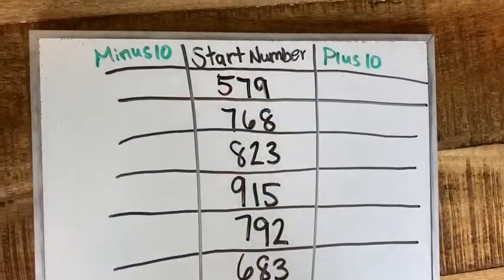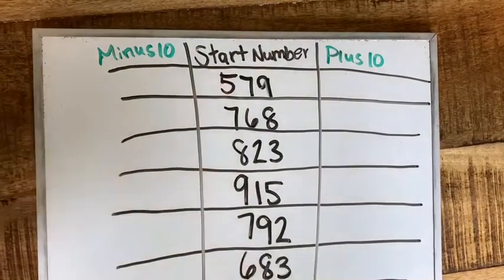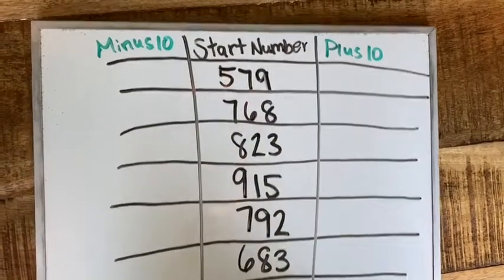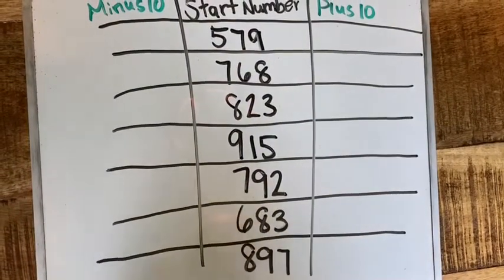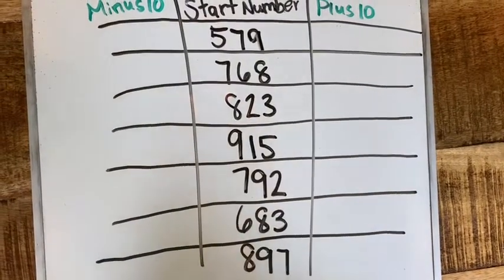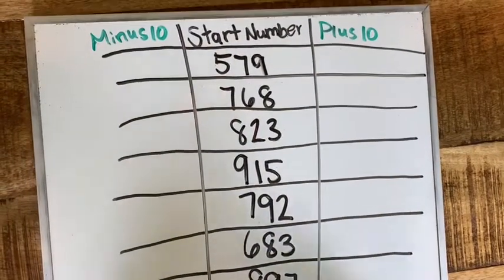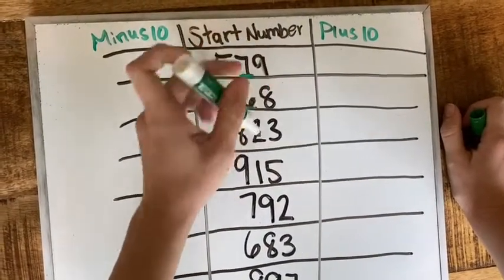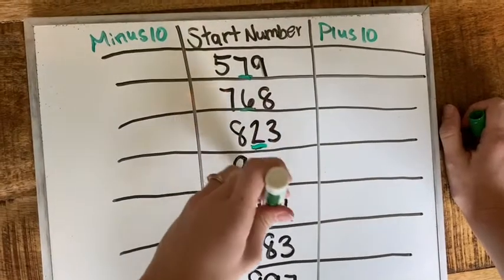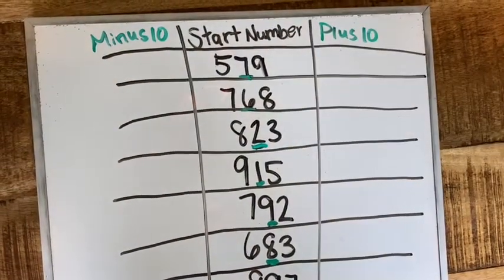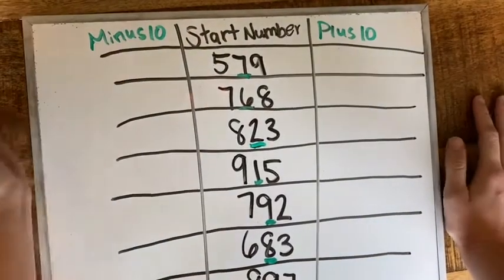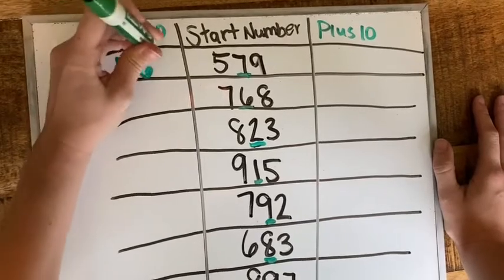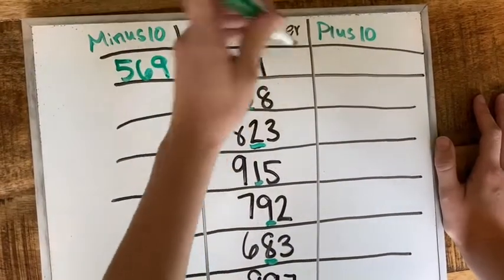All right, now we have page 327 and it's minus 10 and plus 10. Now I will say I went in order until the last one and I skipped to that one because I wanted to make sure that we talked about that one. So 579 plus 10, so we're looking in the tens place in all of these. If you are having trouble remembering that, I would just underline the tens place so you can remember. So 579 minus 10, so we're going to take away a 10, one less than 7 is 6, 569, and one more than 7 is 8, 589.